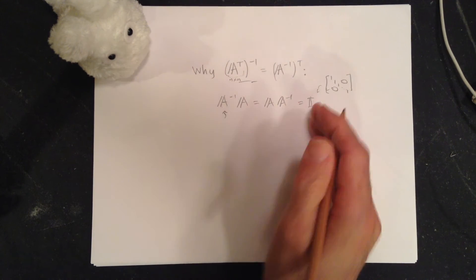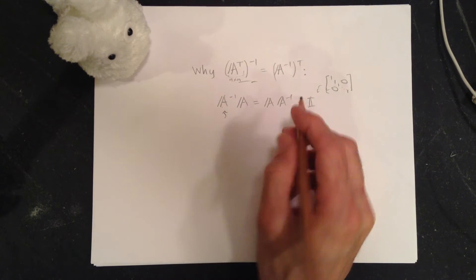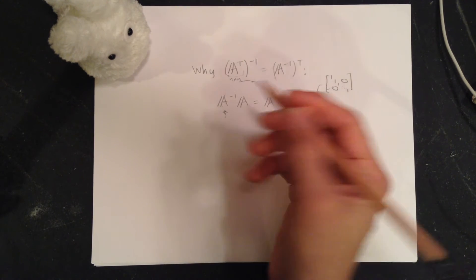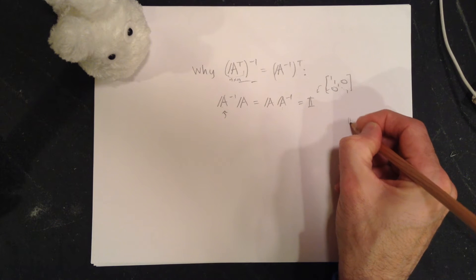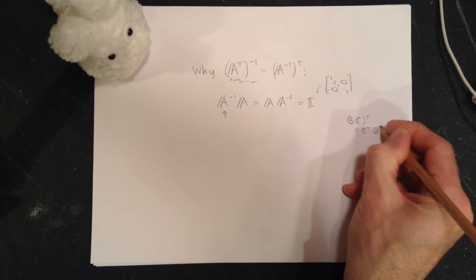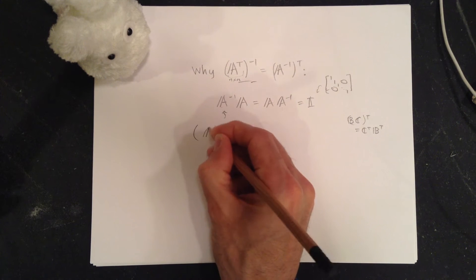That's the basics. That is the definition of what it is to be an inverse. We have this nice transpose rule: (BC)^T equals C^T B^T. So let's do that and see what happens.